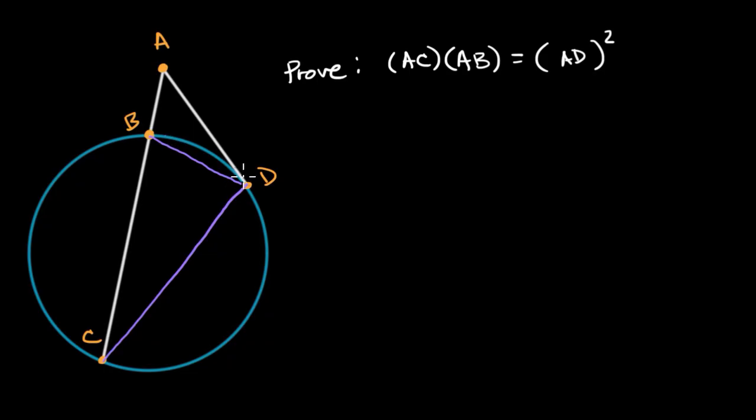That it intersects, that this angle's going to be half that. So this is going to be half that arc measure, and this is going to be half that arc measure. We know that these are going to have the same measure.